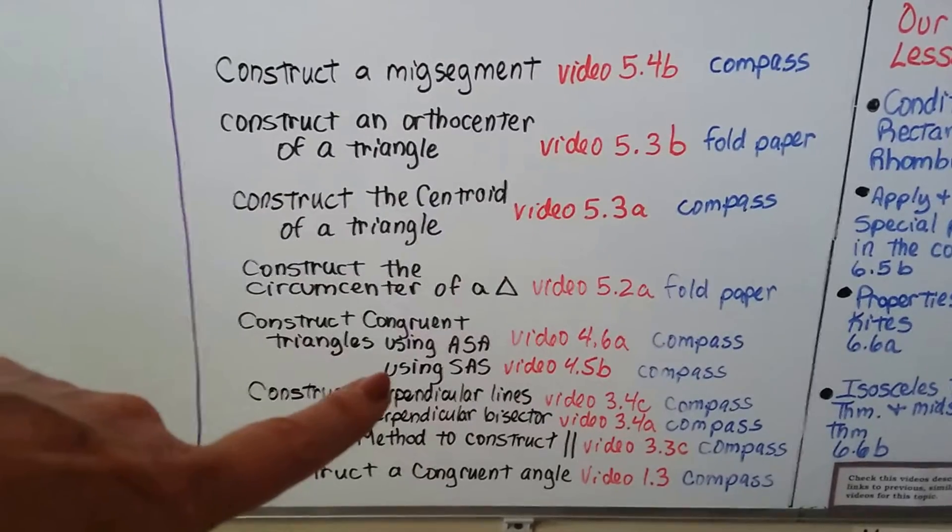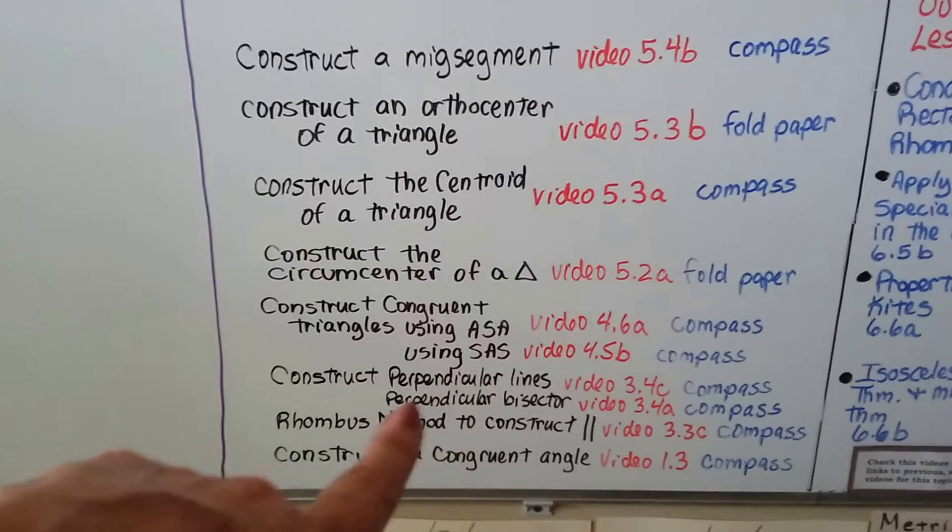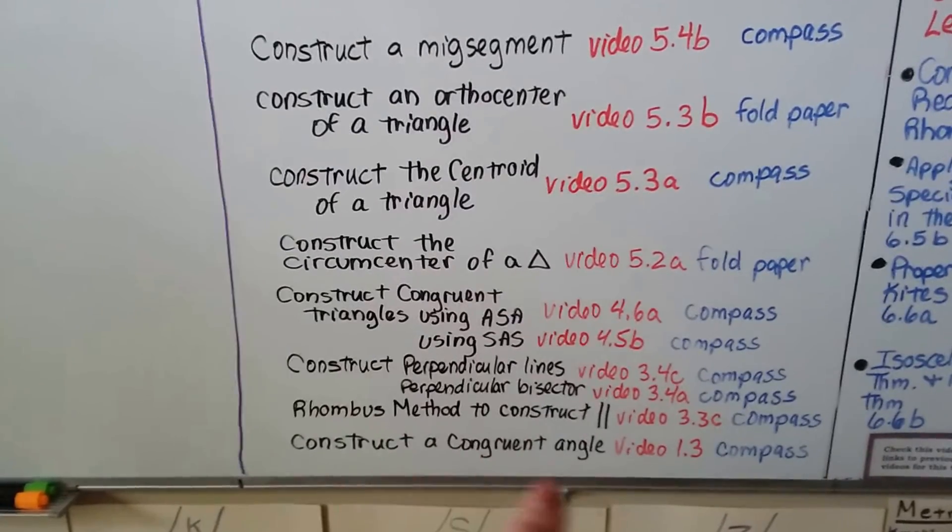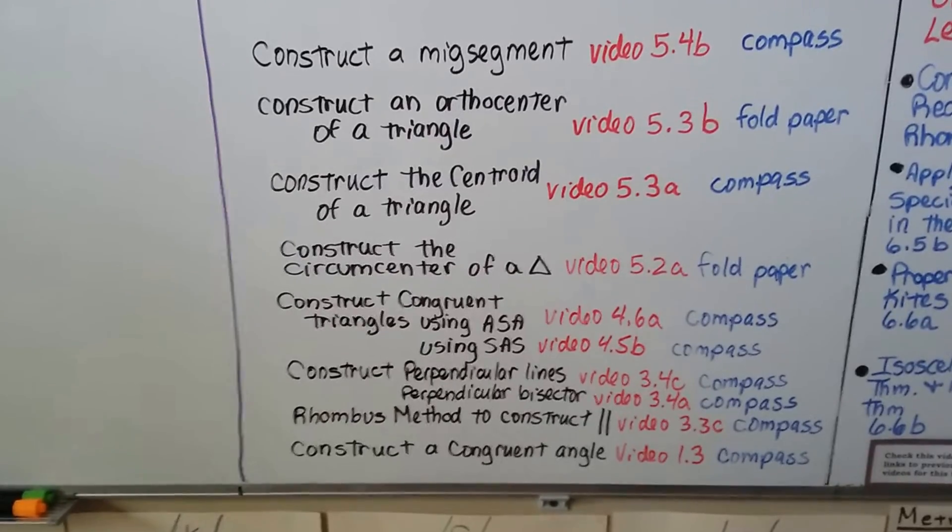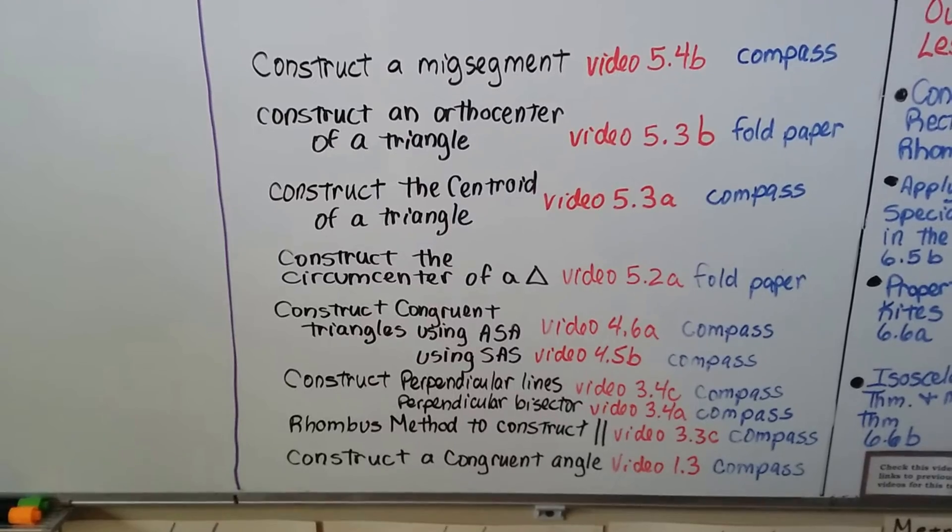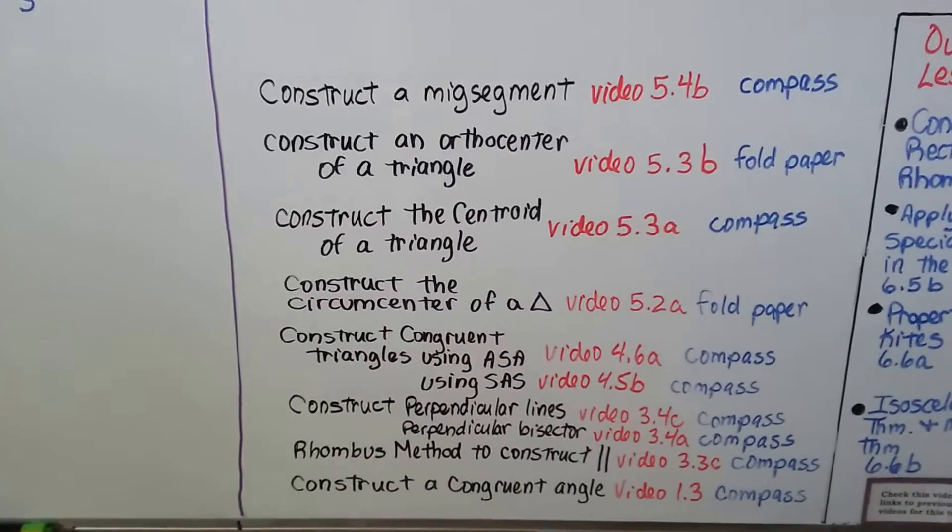So we've got a congruent triangle using ASA or SAS, we can make perpendicular lines or bisectors, we've got the rhombus method to construct parallel lines, or just to construct a congruent angle. And all of these are in the geometry playlist, so just write down the ones that you're interested in, and go to the playlist and scan through it.